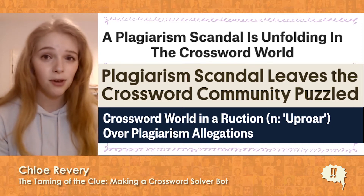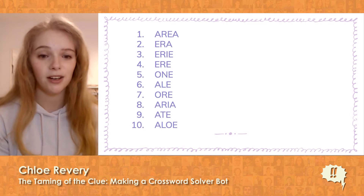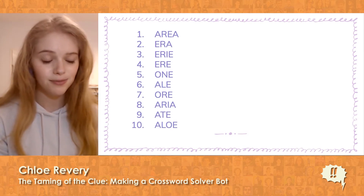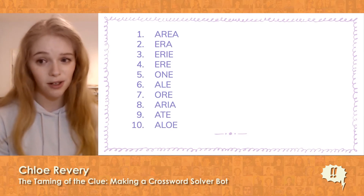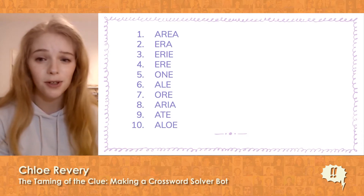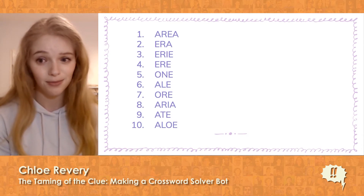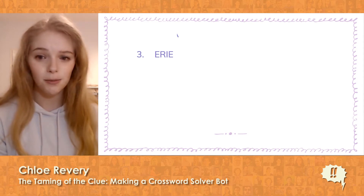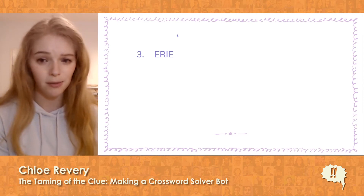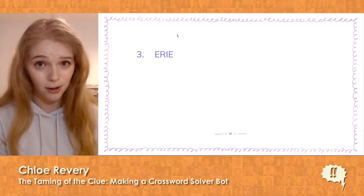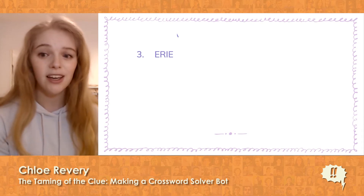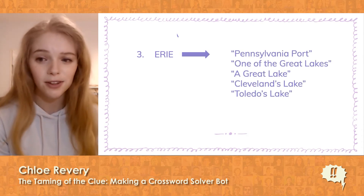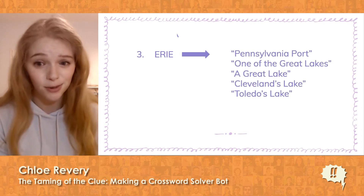Here are the ten words that most frequently appear in American crossword puzzles. Notice all the vowels. Not only do these words appear all the time, but they often appear with the exact same clues. For example, the clue 'eerie' has appeared in crosswords thousands of times, but 20% of those times it appears with one of only five clues in this exact wording.